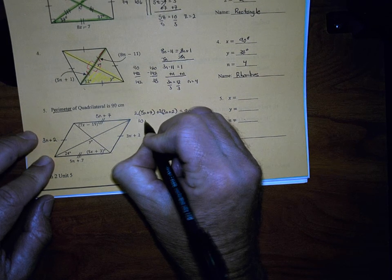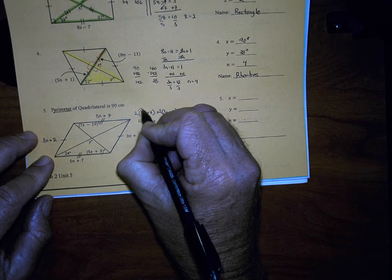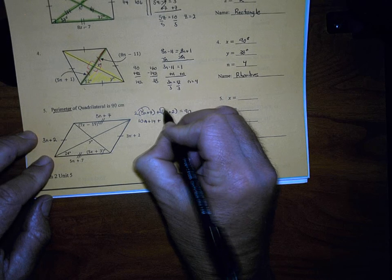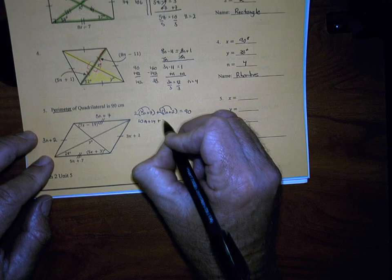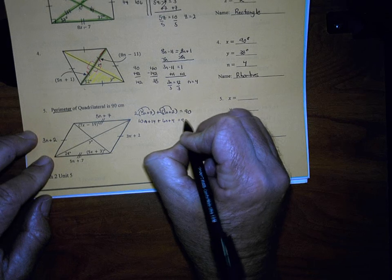10N plus 14, distributing the 2, plus, distribute the 2 here, that would give me 6N plus 4, is equal to 90. So I'm just solving for N.